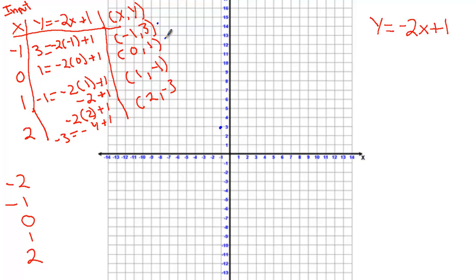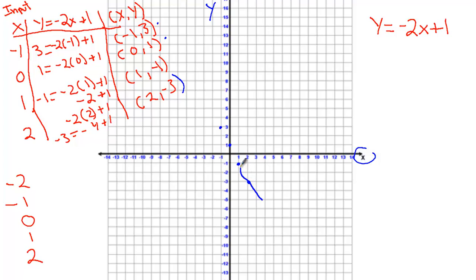The next ordered pair is 0 comma 1 — start at zero and go up to 1. The next is 1 comma negative 1 — start at x equals 1 and go down to negative 1 on the y-axis. The next ordered pair is 2 comma negative 3. As you can see, we're starting to get a line forming, and we graph the line through all these points.